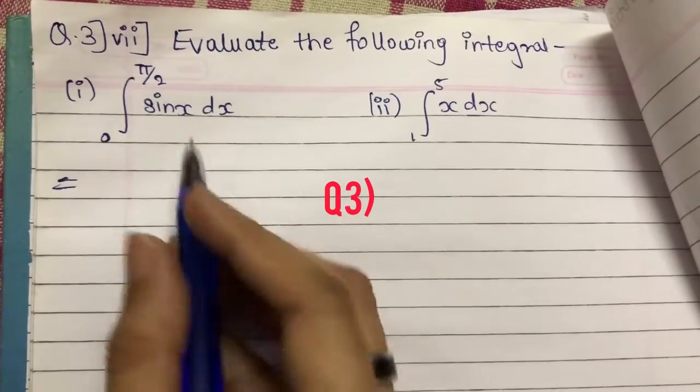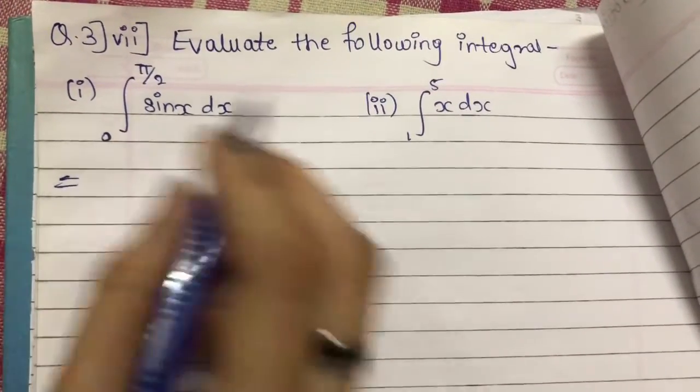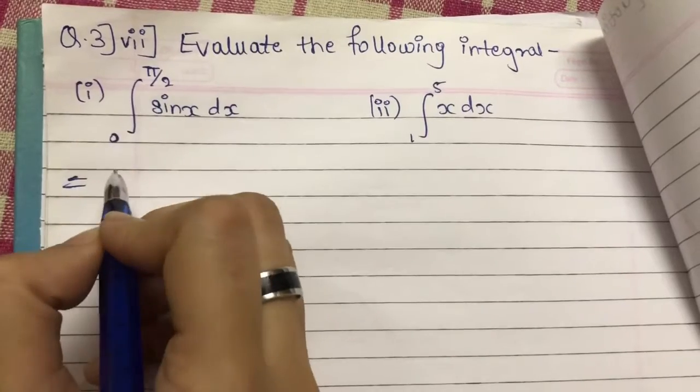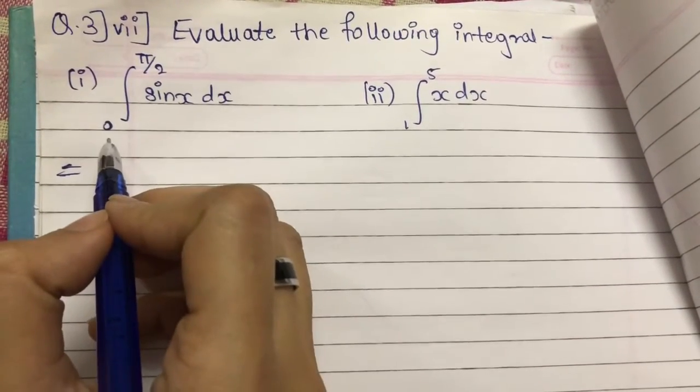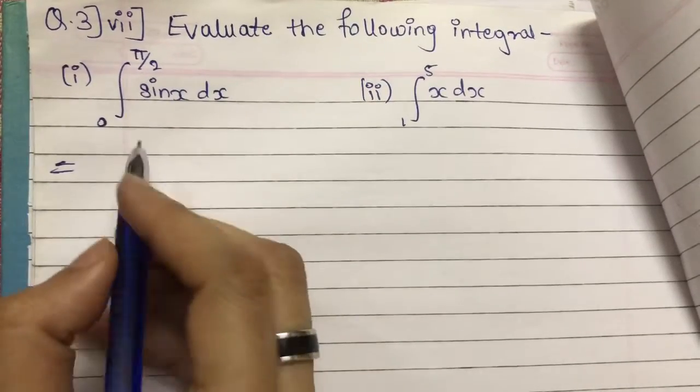Starting with question number 3, 7th numerical, in that we have two sub-questions, so I will start with first one. That is, integrate sin x dx with the limit value 0 to pi by 2.